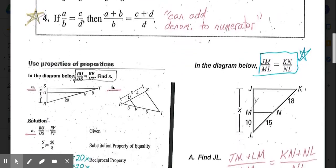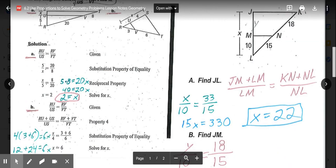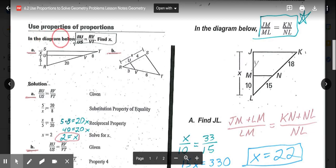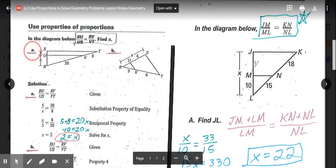Let's look at a couple examples first on the left here of properties of proportions. In the diagram below, RU/US = RV/VT. They want us to find the value of X. So they gave us a proportion and they want us to find a missing piece. If we look at example A, if we're looking for X, X is the distance for segment SU, or US.